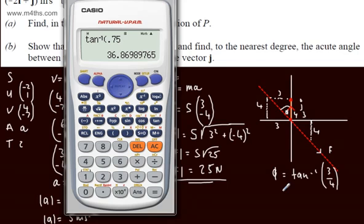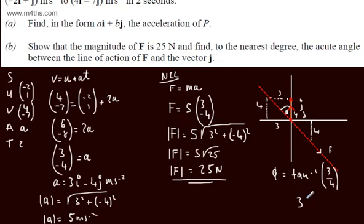That gives me 36.86 and so on. So 36.86 and so on. We need it to the nearest degree, so it's going to be 37 degrees. So that's the angle that it makes with the vector j. This is one way of showing it. Certainly not exclusive, but it's one way to understand what we're actually looking for.